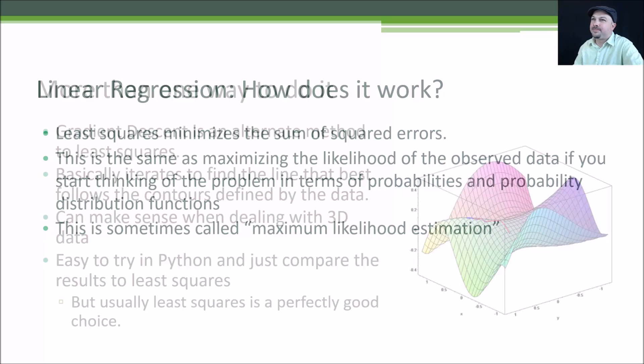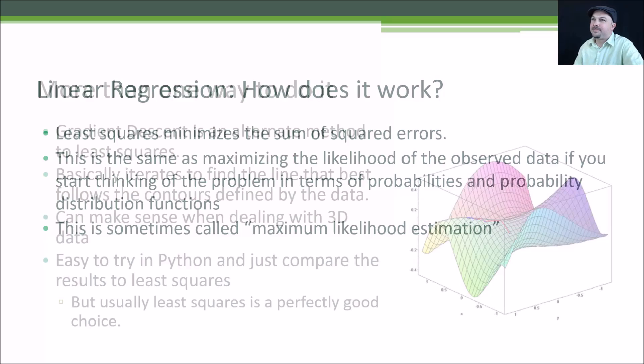There is more than one way to do it. We've talked about ordinary least squares as being a simple way of fitting a line to a set of data, but there are other techniques as well. Gradient descent is one of them. It works best in three-dimensional data and tries to follow the contours of the data. It's very fancy and a bit more computationally expensive, but Python makes it easy to try out if you want to compare it to ordinary least squares. Usually, least squares is a perfectly good choice for linear regression.